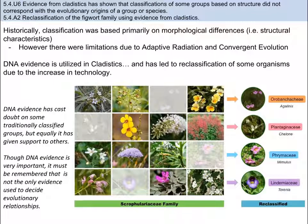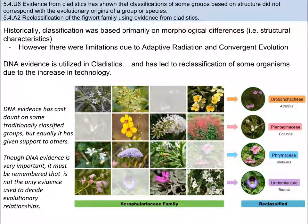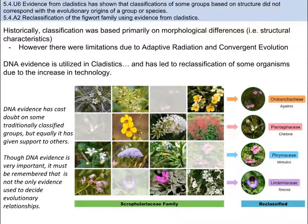Technology and science go hand in hand. Historically, classification was done based on morphological differences — structural differences. Some challenges were things like adaptive radiation and convergent evolution. But now we have DNA, which along with morphological differences has increased the efficiency and accuracy of cladistics. A scientist who only relied on one piece of evidence when others exist would be conducting silly science.